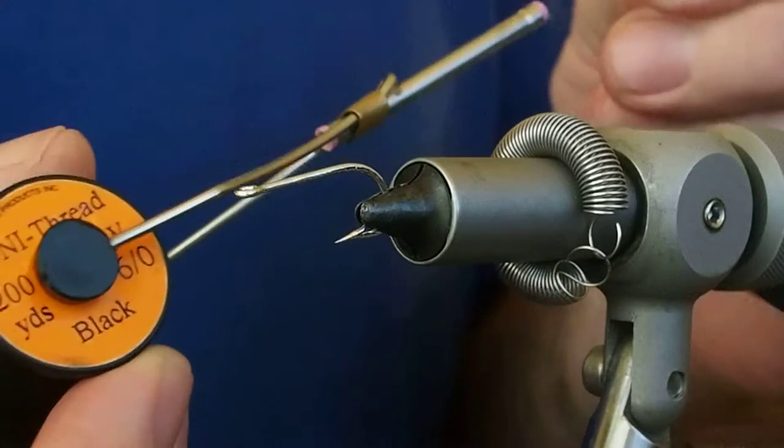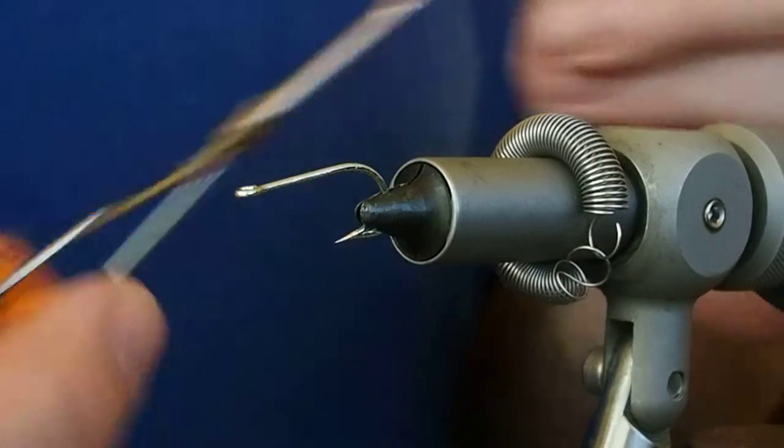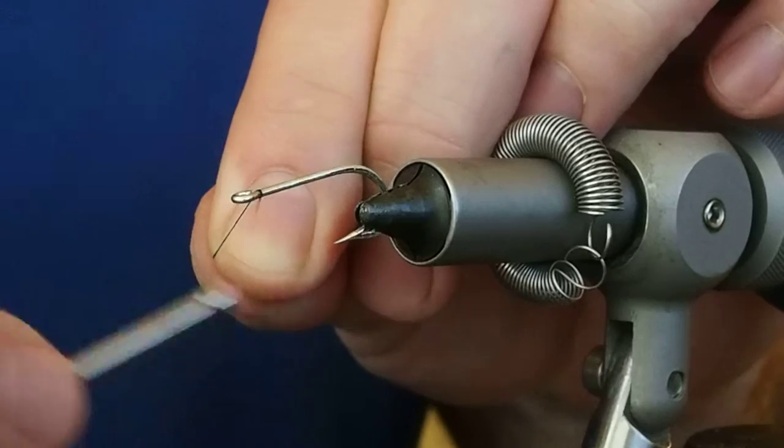I'm going to be tying this with a 6-Ott Black Uni. I'm going to go ahead and lay down the thread base.